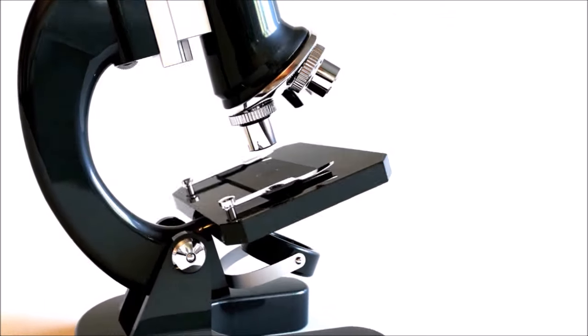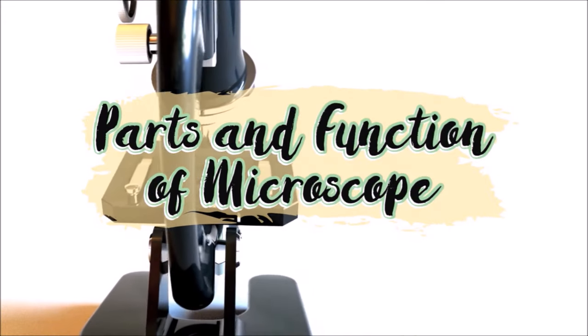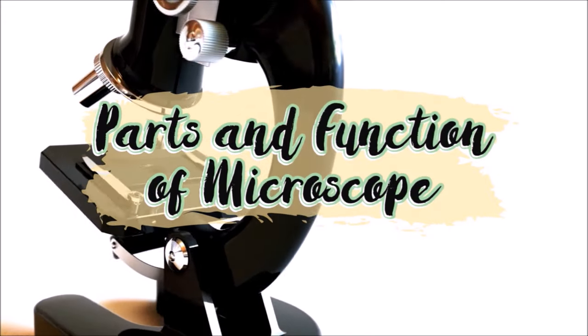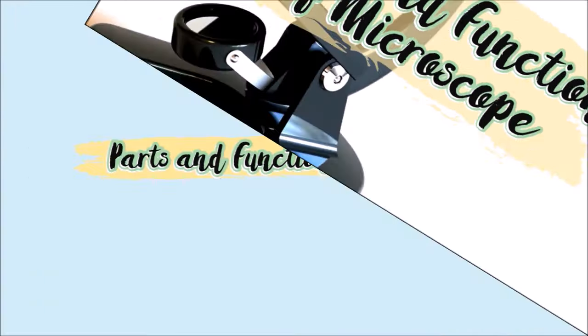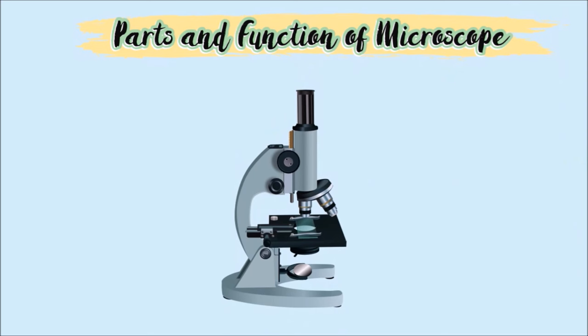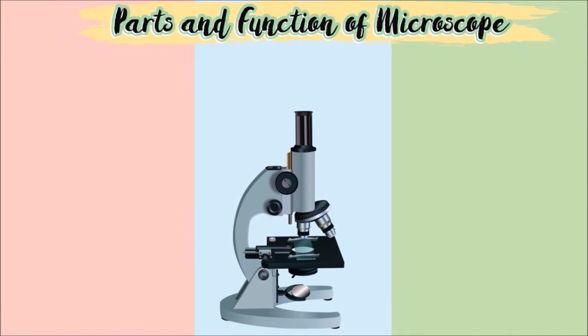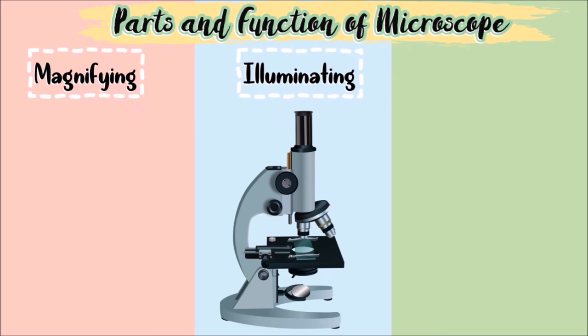Now let's talk about the different parts and function of the microscope and how it really worked. The parts of compound microscope can be divided into three groups: the magnifying, the illuminating, and the mechanical parts.